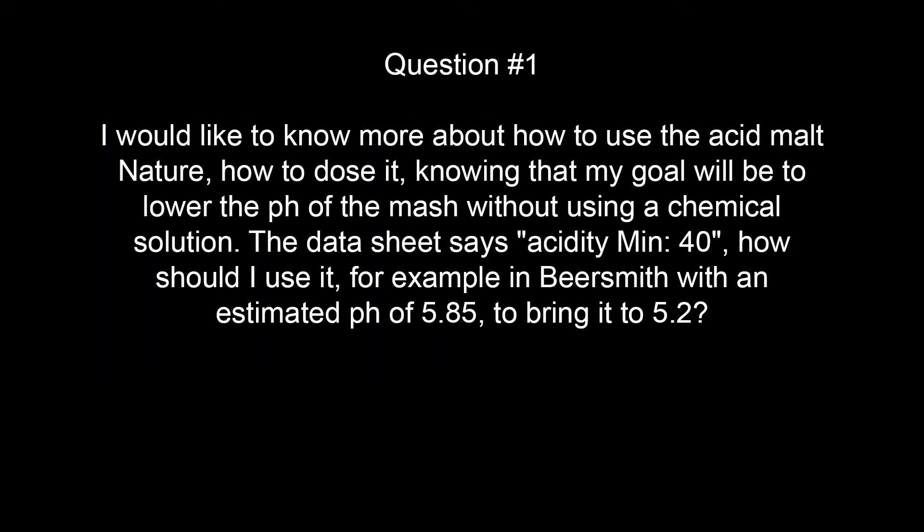Question number one. I would like to know more about how to use the acid malt, how to dose it, knowing that my goal will be to lower the pH of the mash without using a chemical solution. The data sheet says acidity minimum 40. How should I use it — for example, in Beersmith — with an estimated pH of 5.85 to bring it to 5.2?